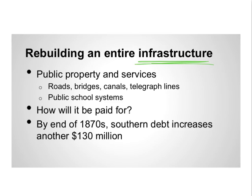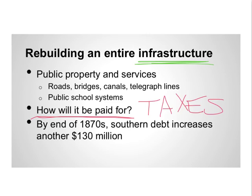Of course, the question becomes how all of this would be paid for — and the answer is taxes. By the end of the 1870s, the Southern debt had increased by another $130 million, making reconstruction incredibly expensive. Meanwhile, people in the South weren't seeing much of that money come to them directly. Sharecroppers, tenant farmers, factory workers, and railroad workers were earning incredibly low wages — no more than 50 cents to a dollar even for a good-paying job.